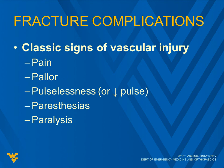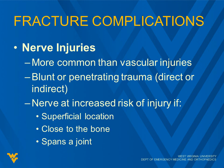Pulselessness is a very late finding, always. Nerve injuries are more common than vascular injuries. The result from blunt or penetrating trauma can be both direct or indirect. A nerve is at increased risk of injury if it's in a superficial location, if it's close to the bone, or spans a joint.